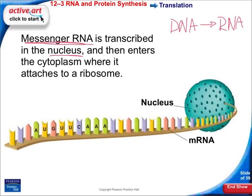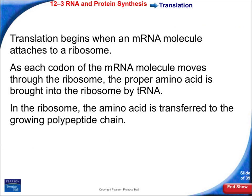Once our mRNA strand is complete, it's going to leave the nucleus through nuclear pores and go to the ribosomes, where the mRNA strand is going to be translated. The messenger RNA attaches to the ribosome and the strand starts moving through it. As soon as the strand detects the start codon AUG, which brings in methionine, translation begins, and amino acids start being transferred to the polypeptide chain.